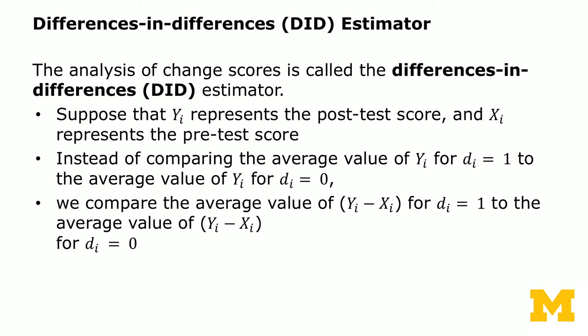With difference in means, what we're going to do is to only look at Yi, the post-intervention test score for the treatment group where Di equals 1, and the average value of Yi for the control group where Di equals 0. Then the difference in means is the difference between the average of the treatment group and the average of the control group. That gives you the treatment effect.